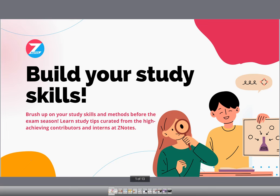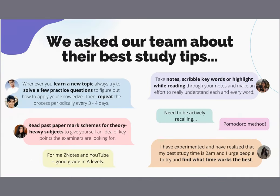So for this workshop, we basically asked our high achieving contributors and interns for their go-to revision tips. Everyone has their own revision style and technique, but we curated this workshop to help you identify and find the way that works for you the best. For some people, scribbling down notes and highlighting keywords is best, while for others, jumping into practice questions and reading mark schemes of past papers is an effective way to revise.